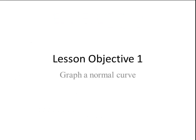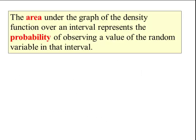Lesson objective number 1. The area under the graph of a density function over an interval represents the probability of observing a value of the random variable in that interval. What this is saying is there is a relationship between area and probability, and that's what we're going to look at in this lesson.